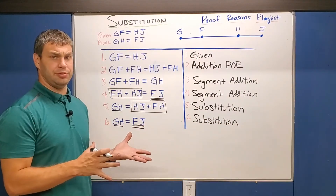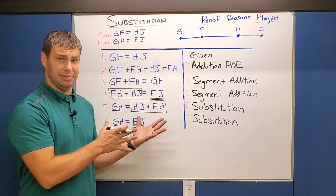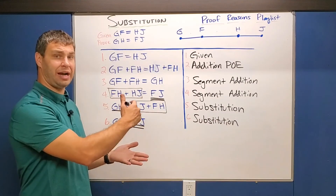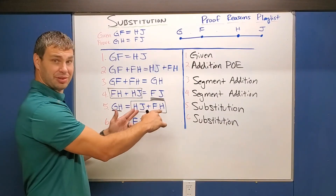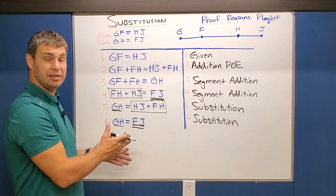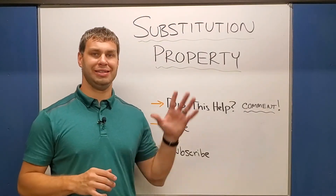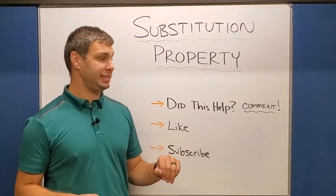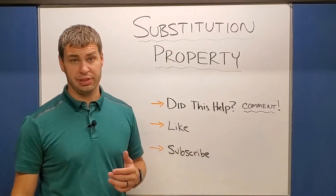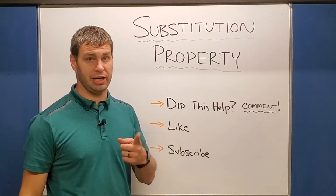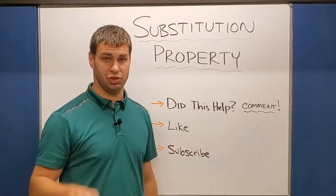In each of those three proofs, we replaced a segment or an angle with something that was the same value — sometimes you have to add a couple of things together to get that value, but in each case we replaced it. That's going to be the key to substitution. I hope this video on the substitution property helped you out — let me know in the comments. And if you want free content, subscribe — it doesn't cost you anything.